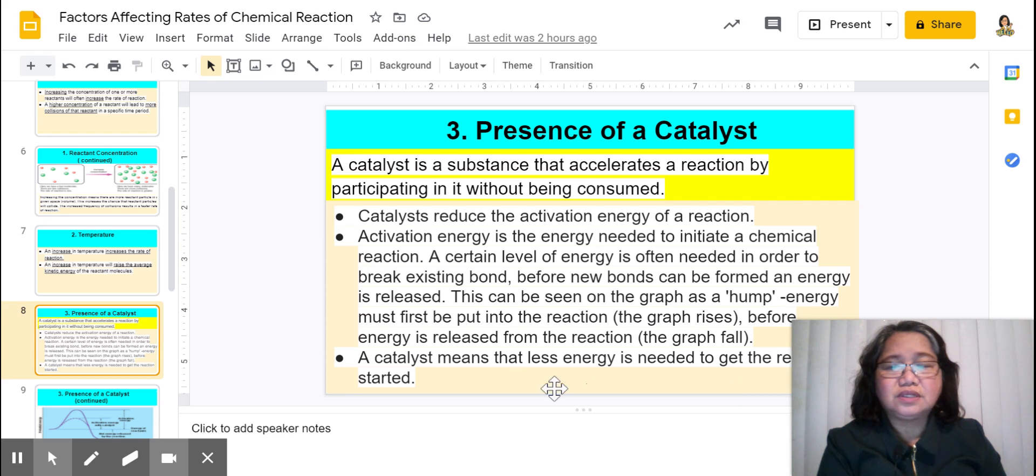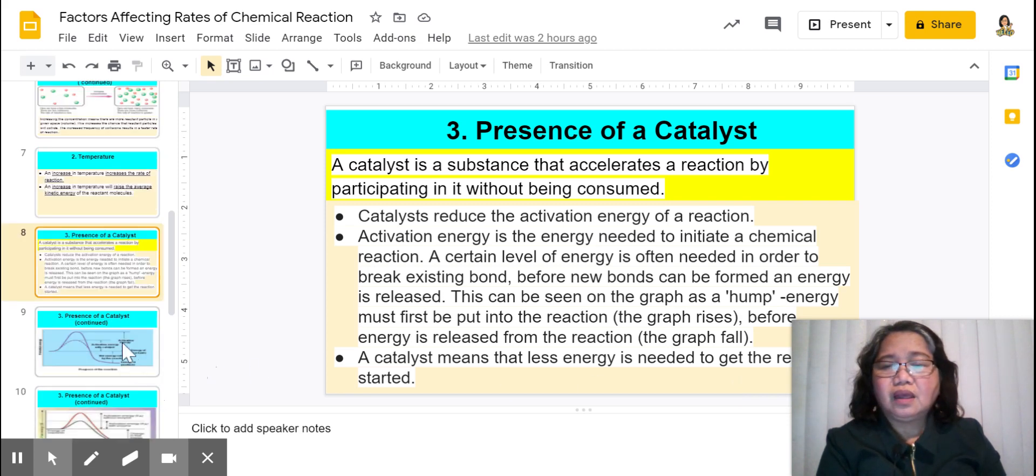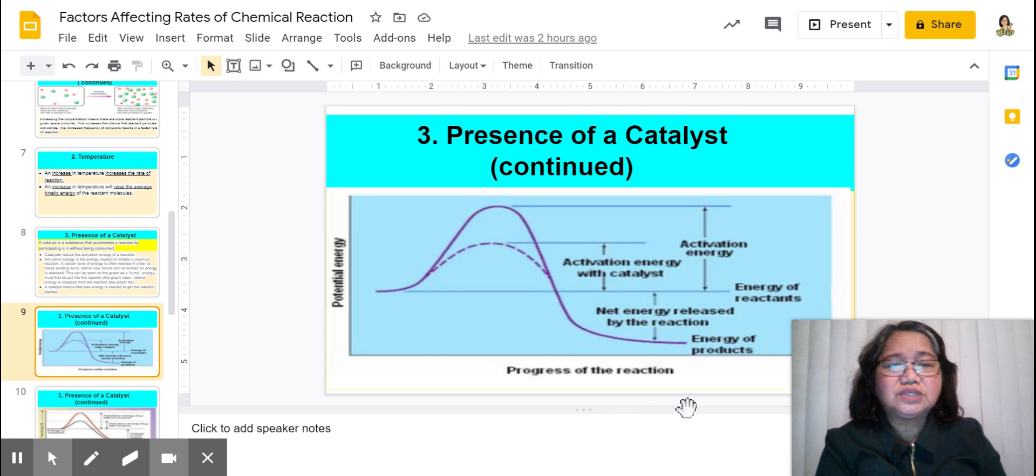Let's take a look at this one, the presence of a catalyst right here. Take a look at the activation energy when you use a catalyst now, compared to one which is uncatalyzed. So the energy is lower, so making the reaction go faster compared to the one that did not use a catalyst.